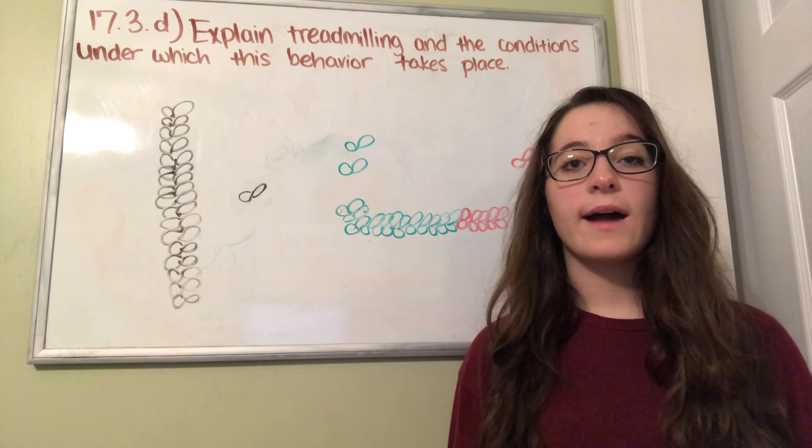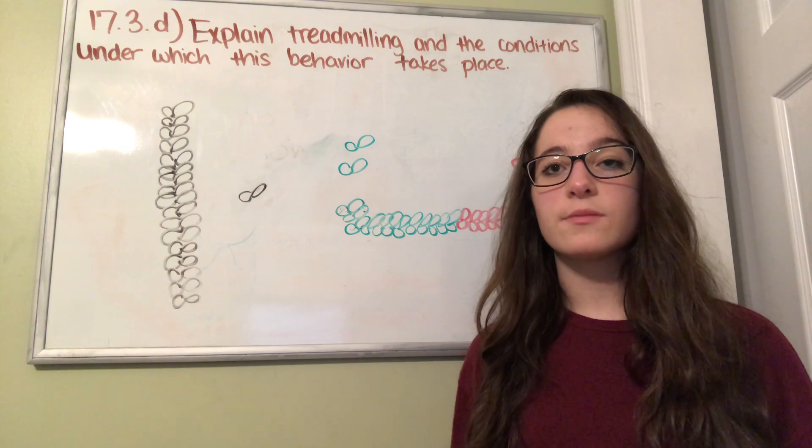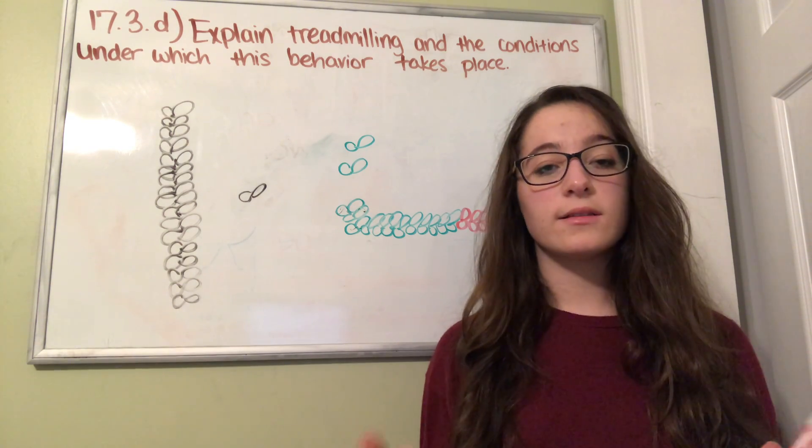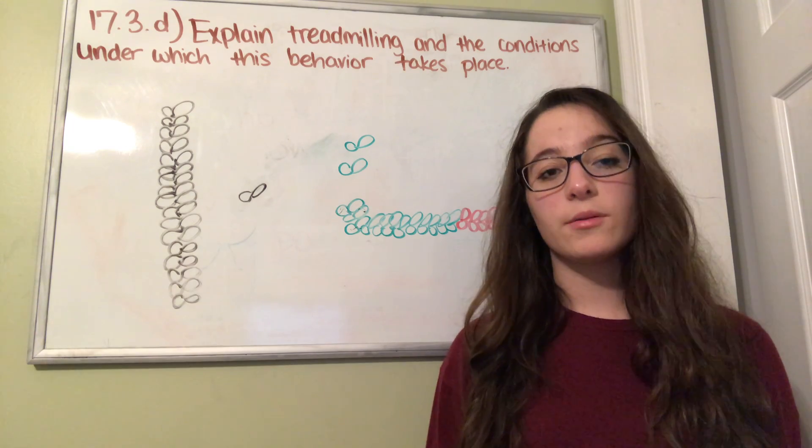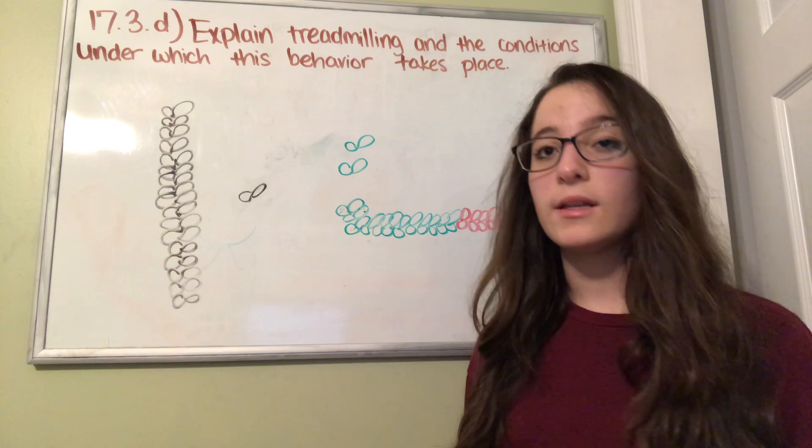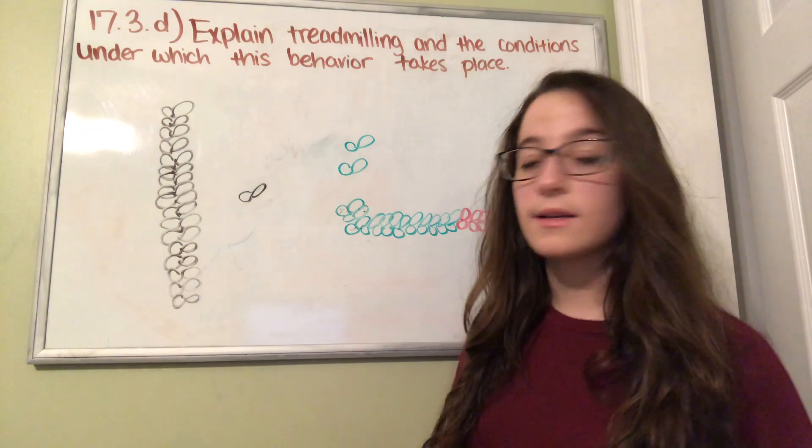In order to be stable, actin filaments must bind to proteins. If they're not stable, the filament can disassemble from both ends into individual actin monomers. Every actin filament has a plus end and a minus end.